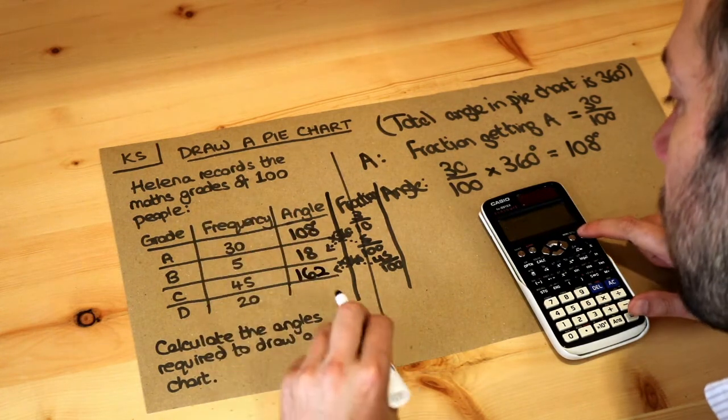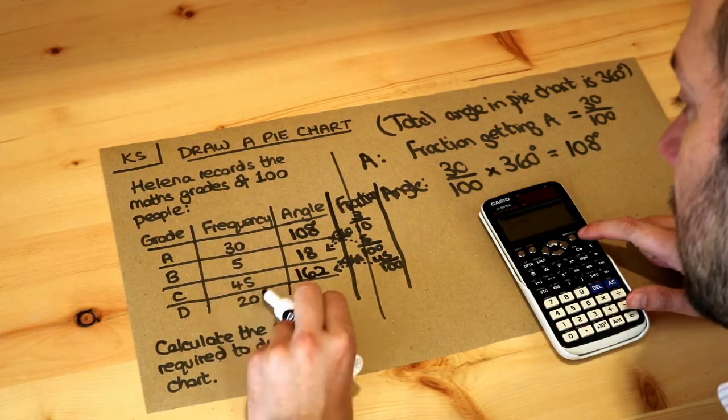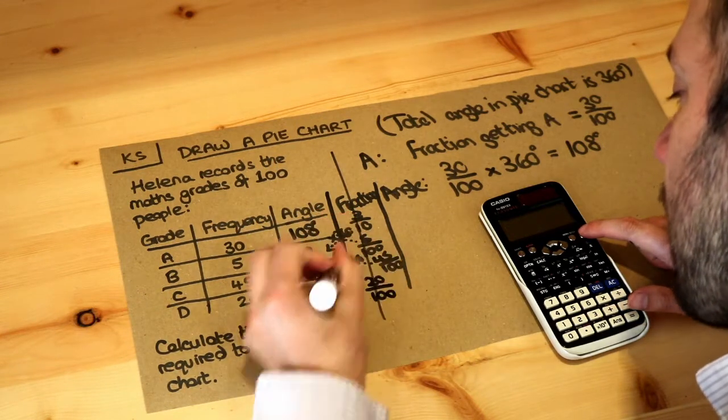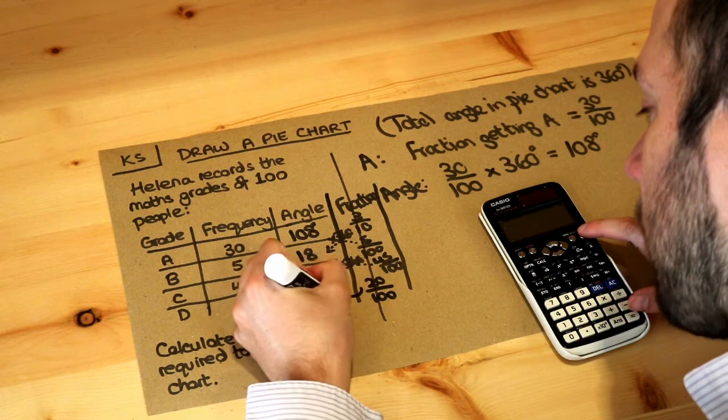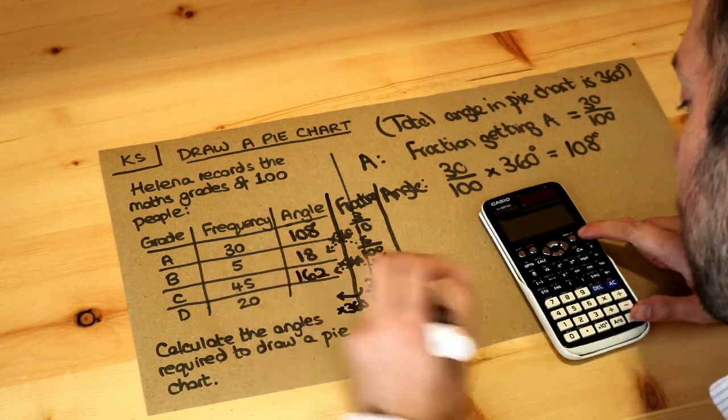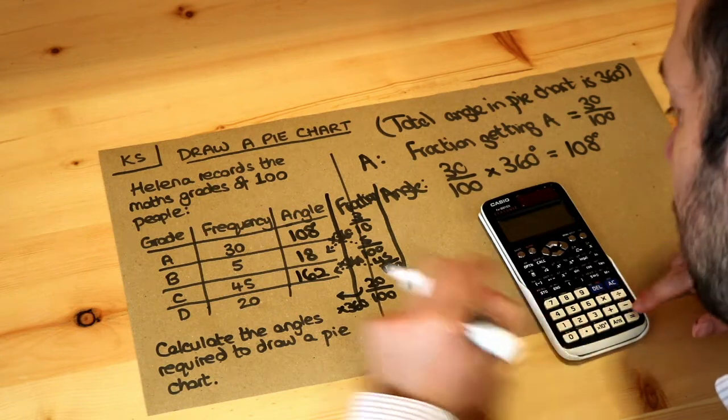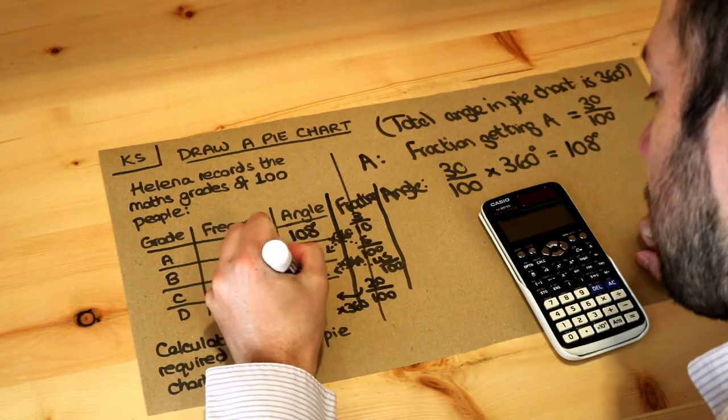And then finally, what's the fraction of people who got grade D? It was 20 out of 100, so 20 hundredths. And again we times that by 360. So 20 hundredths or a fifth times by 360 is going to be 72 degrees.